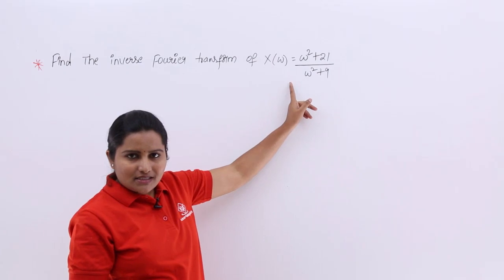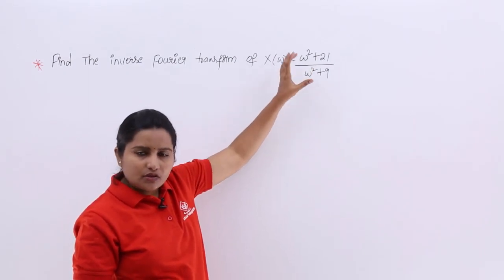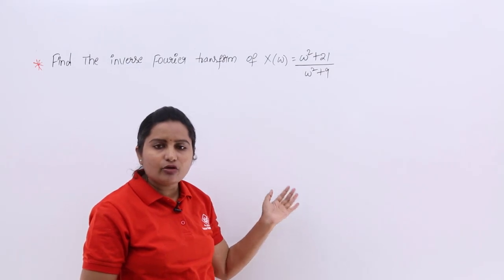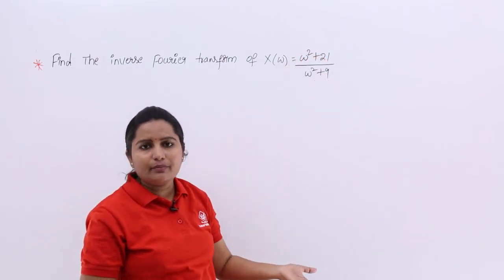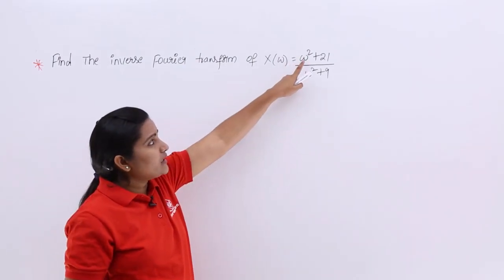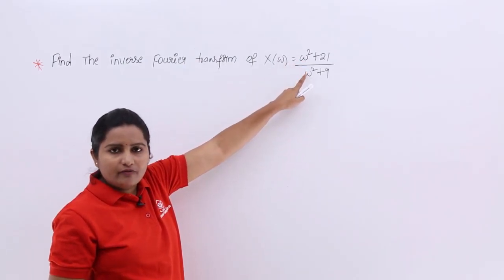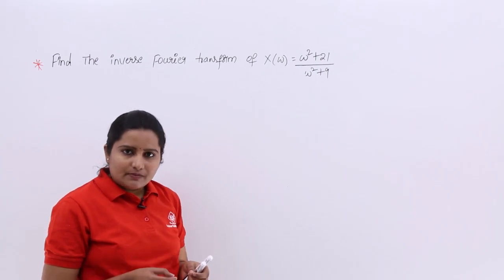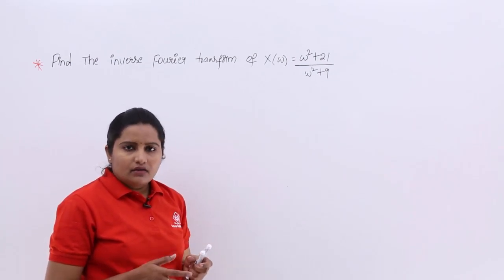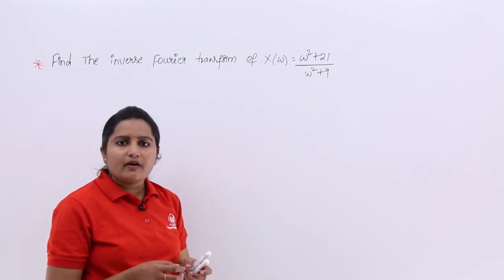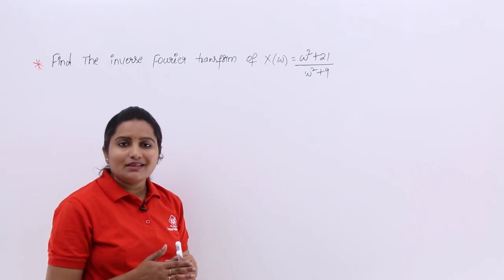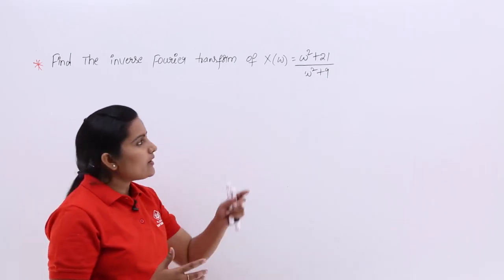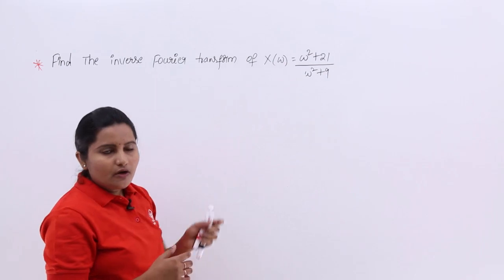When you observe this transform, it is not in strictly proper form. It is in proper form, but we need to extend it to strictly proper. I want to convert this proper equation into a strictly proper equation. For that I need to divide, because here you can see the powers are equal — the highest power of the denominator equals the highest power of the numerator. In an expression, whenever your denominator power is greater than your numerator power, then only that ratio is said to be in strictly proper form. So I want to make this equation strictly proper by division.